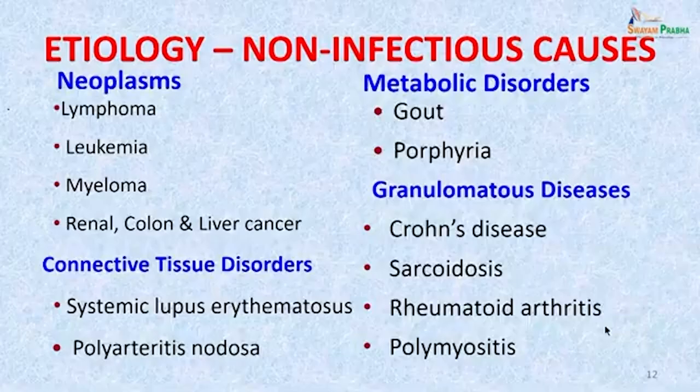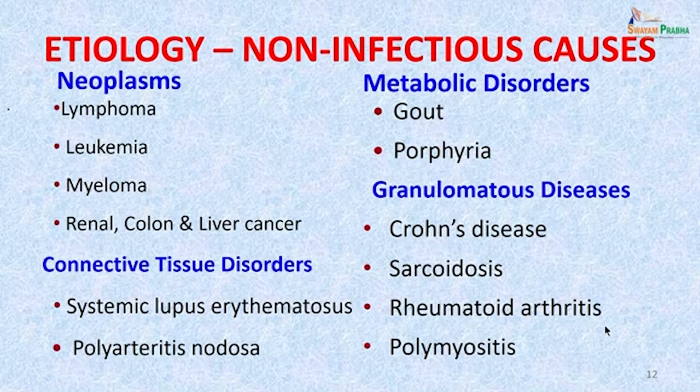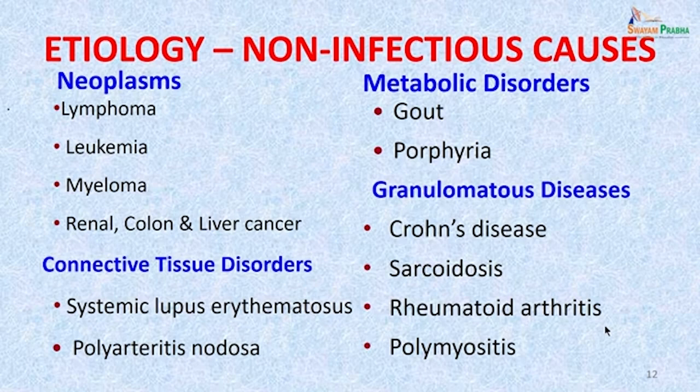We will also cover the non-infectious causes, though we will not be discussing them in detail. Neoplasms such as lymphoma, leukemia, myeloma, renal, colon and liver cancers; connective tissue disorders such as systemic lupus erythematosus, polyarteritis nodosa; metabolic disorders such as gout and porphyria; granulomatous diseases such as Crohn's disease, sarcoidosis, rheumatoid arthritis, and polymyositis can also sometimes present as febrile illness.